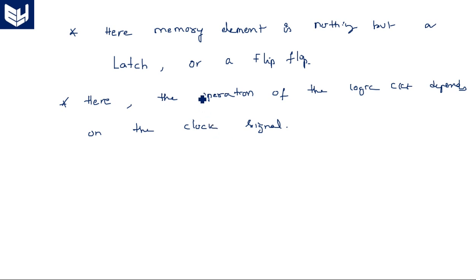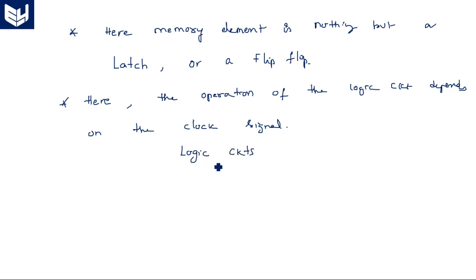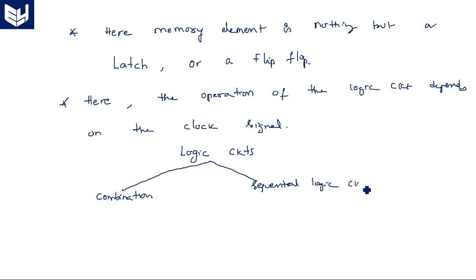Whenever you use the term latch, it is operated with an enable signal. If you use a flip-flop, it requires a continuous oscillating signal — a clock signal. Generally, logic circuits are classified into two types: combinational logic circuits and sequential logic circuits. Sequential logic circuits are combinational circuits plus memory elements in a feedback.